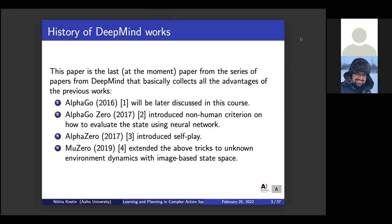The history of DeepMind works is the following. The first paper was published in 2016, and it was the very famous paper that beat the current world champion in Go. It was very successful at that point, but it was very restricted in many ways. The next few papers made several adjustments to the base algorithm so that it became more and more universal.